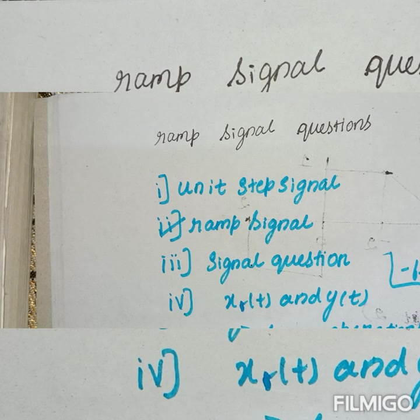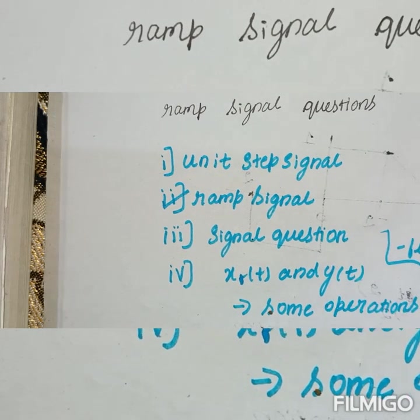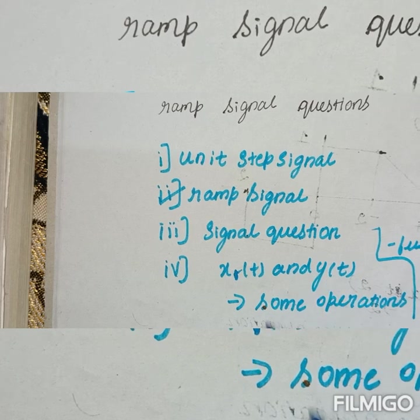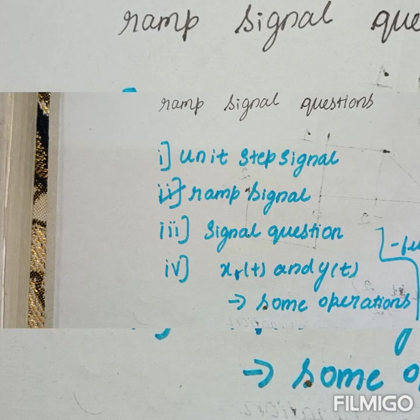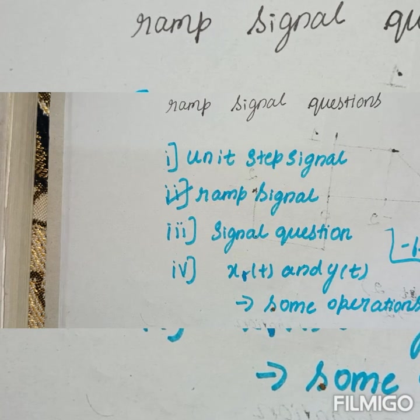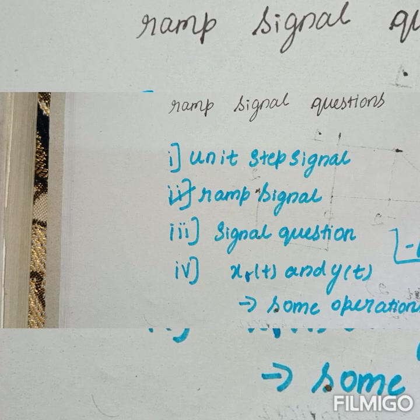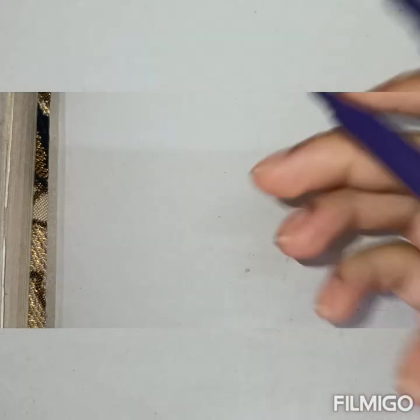As I've already told you in the last lecture, the important question types are: the unit step signal question, the SAM signal question, the question where he gives a signal and asks you to find x of t, and the x of t and y of t question. These four questions are really important and I've seen them in many question papers. But since we don't know what he might ask, let's also do the triangular signal question, which is of an easier manner. Let me start today's question with respect to triangular signals.